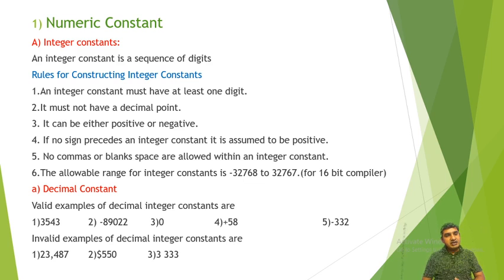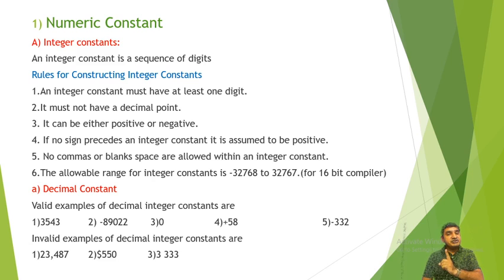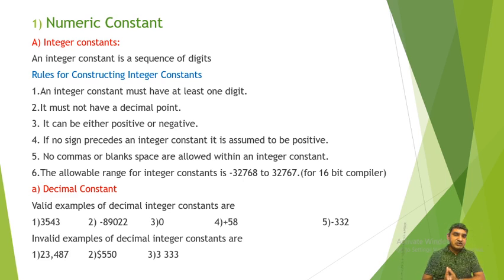The allowed range for integer constant is minus 32,768 to 32,767 for a 16-bit compiler. We have covered valid examples and invalid examples of decimal integer constants.